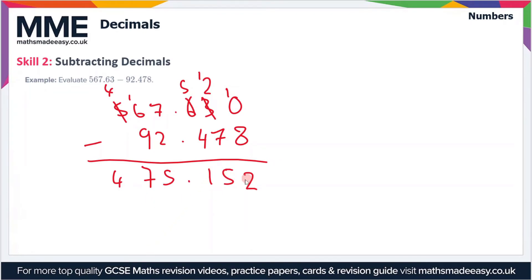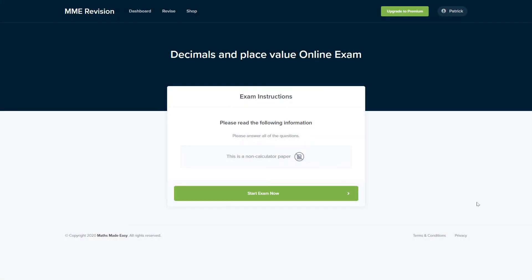Then we've got 4 minus there's nothing in this column so that just remains 4. So we're left with 475.152 as our final answer.